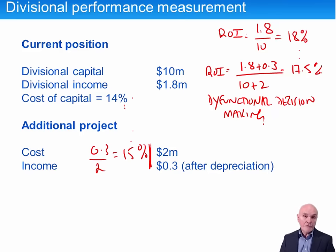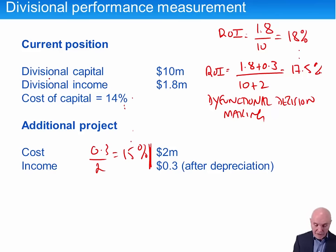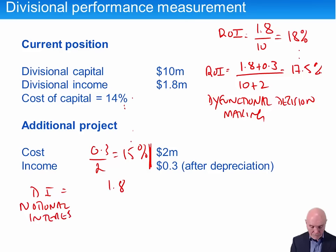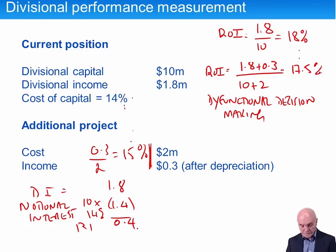Let's see how this works under residual income. We start with the current position: divisional income is 1.8. We then make a notional interest charge for the division's use of capital — 14% applied to £10m capital = £1.4m. So residual income is 1.8 minus 1.4 = £0.4m. This is a worthwhile division — it pays for its capital and still makes an additional £0.4m.